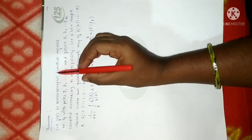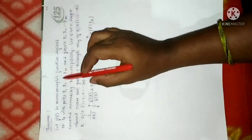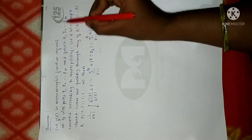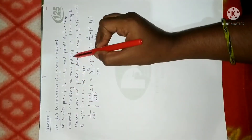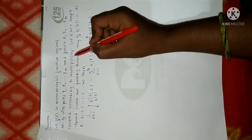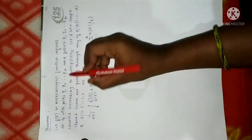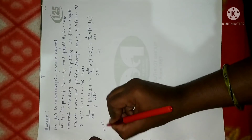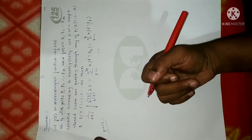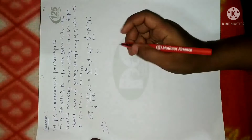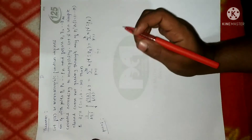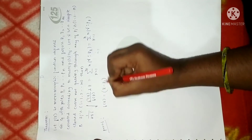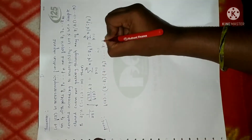Coming to the proof: f(z) is meromorphic in domain D — analytic except at the poles. Here p₁ to pₙ are poles and z₁ to zₘ are zeros counted according to multiplicity. Let gamma be a simple closed curve not passing through any of these poles or zeros. We need to prove the theorem statement.